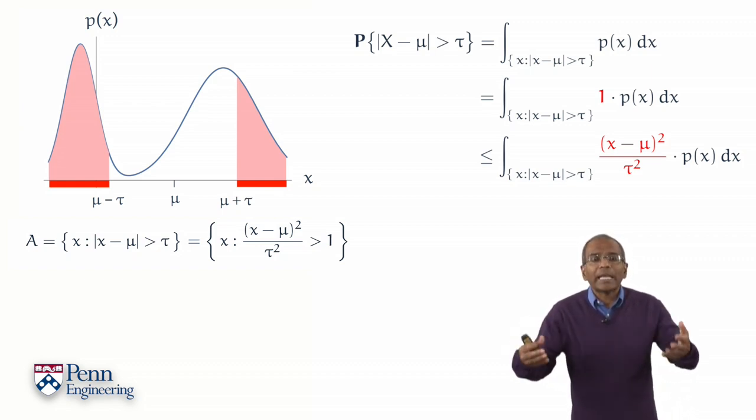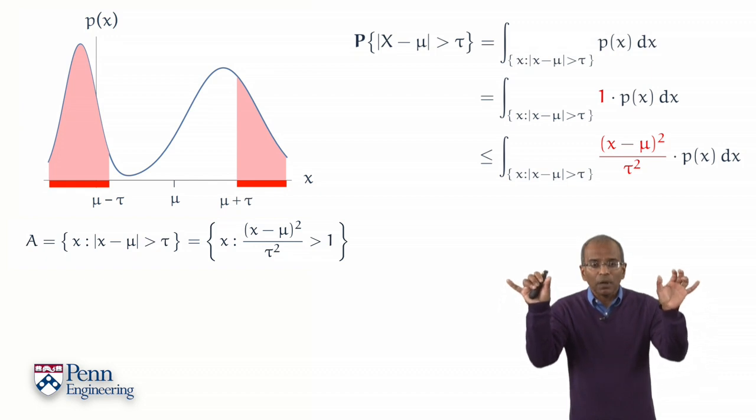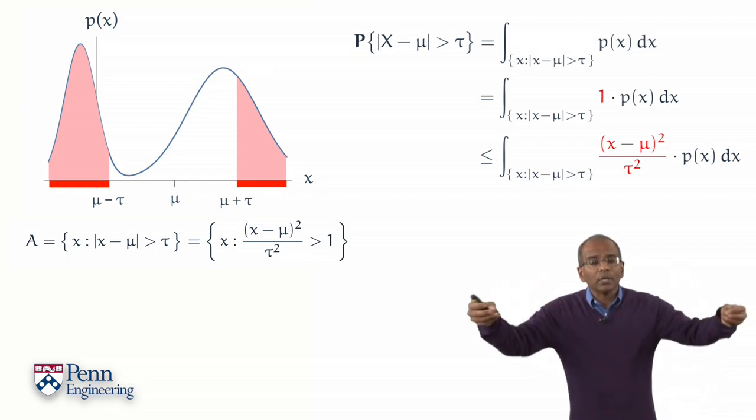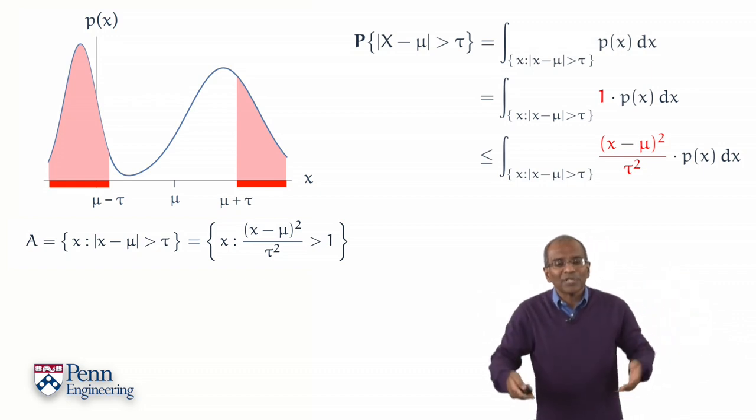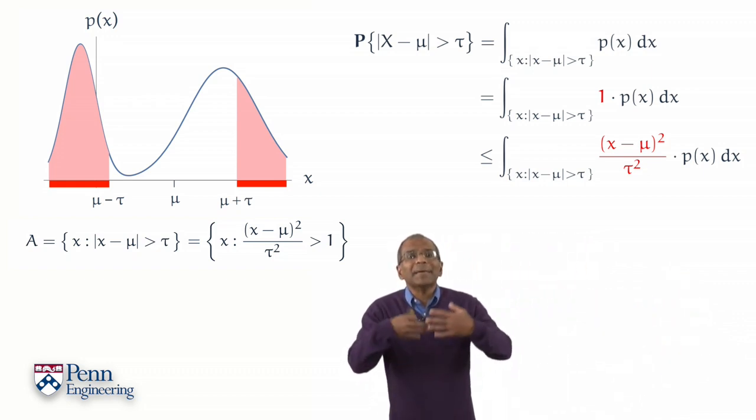But the integrand is a square and a non-negative mass density function. The integrand is non-negative everywhere on the real line. And so, if I take the integral and expand its domain from the set A to the entire real line, I'm only adding more positive values. I can only make the integral bigger.